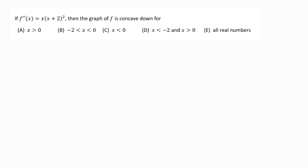This example is going to start us off with a second derivative. The second derivative of f is equal to x times (x plus 2) squared. They want to know when is the original graph f concave down.